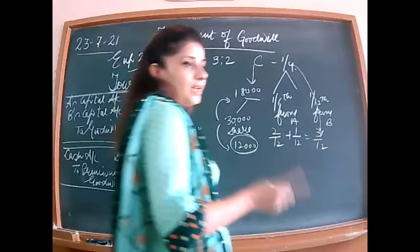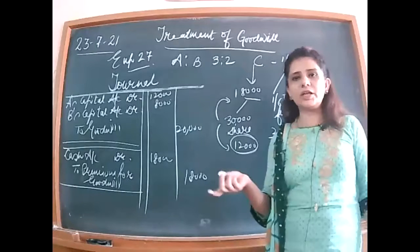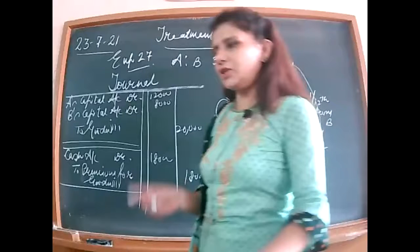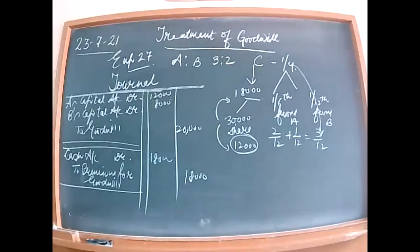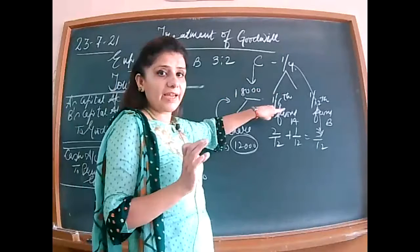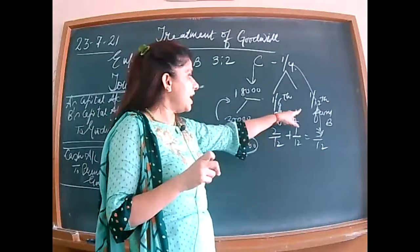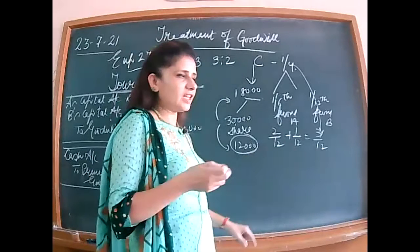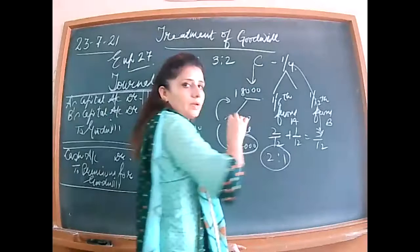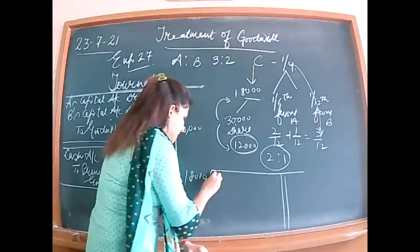If nothing is mentioned about a change in profit sharing ratio, the sacrificing ratio is always equal to the old ratio. But here it is given: 1/6th from A and 1/12th from B, so sacrificing ratio is 2/12 from A and 1/12 from B — that is 2 is to 1. For the amount C brought in cash, debit Premium for Goodwill.